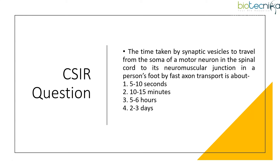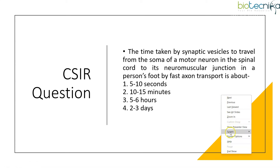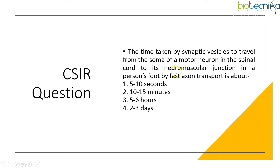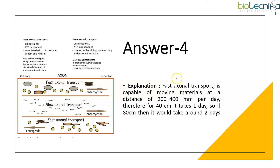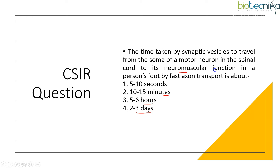Now for a numerical question: the time taken by synaptic vesicles to travel from the soma of a motor neuron in the spinal cord to its neuromuscular junction in a person's foot by fast axonal transport. Options are: 5–10 seconds, 10–15 minutes, 5–6 hours, or 2–3 days. To solve this you need to know the speed of fast axonal transport. Fast axonal transport can be anterograde — from cell body towards axon terminals — or retrograde — from axon terminals towards the cell body.